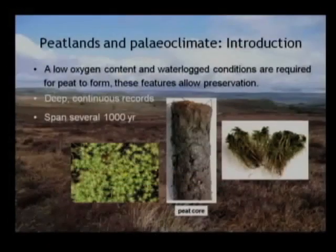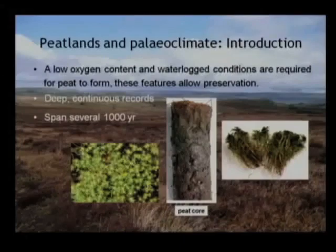So why are peatlands useful for climate studies? There are several attributes which make them very favorable. Firstly, because of the unique waterlogged conditions that we find in peatlands and a fairly low oxygen content, the plants that live at the surface of the peat bog and other microorganisms preserve very well within the fabric of the peat. So we can analyze samples going back many thousands of years, and we can be very emphatic about our interpretations down to species level.